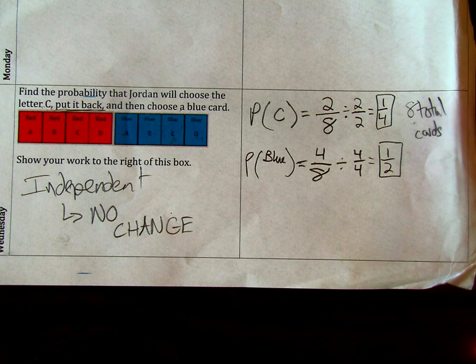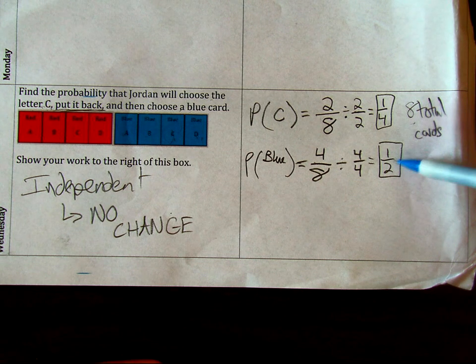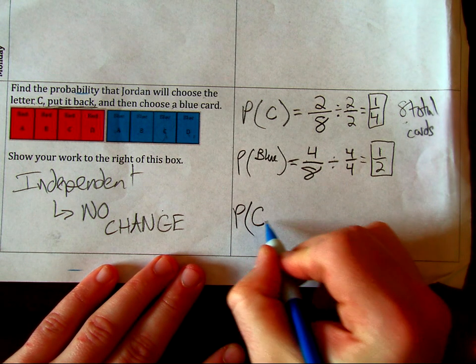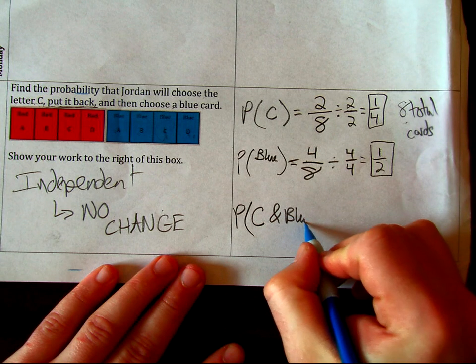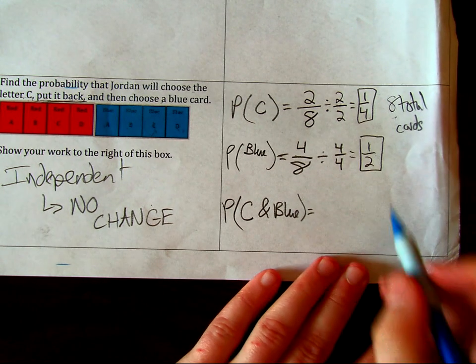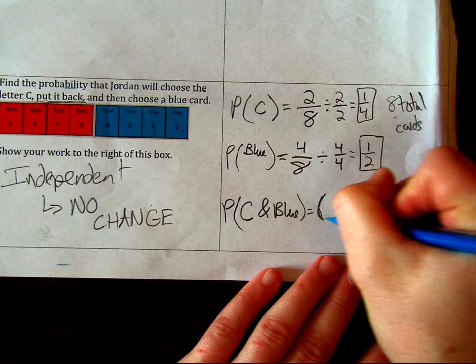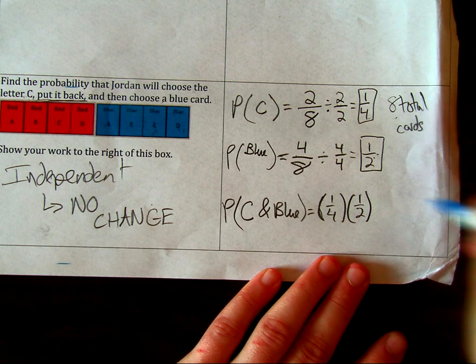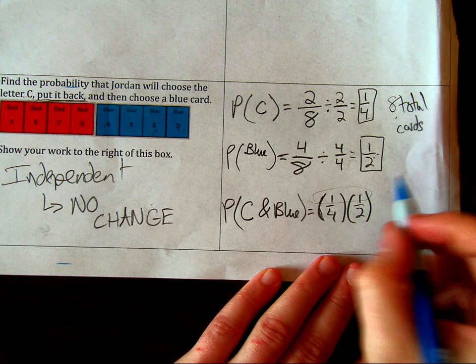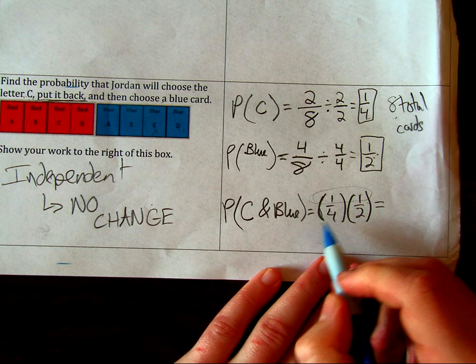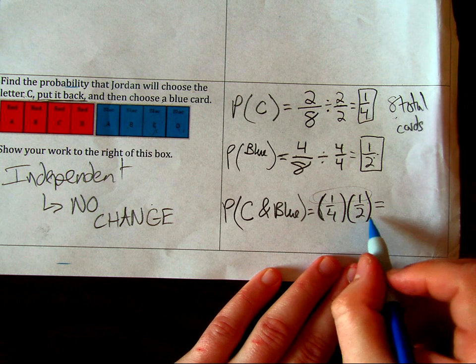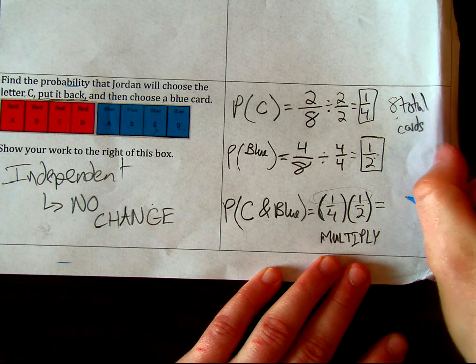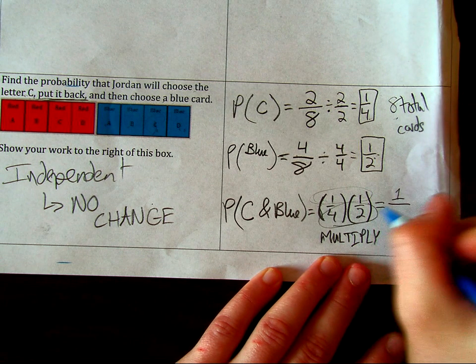Now that we have those two fractions, make sure you multiply those two together. So we write it like this. We say the probability of those two events happening at the same time, we would say probability of picking a C and picking a blue, is equal to. And then we have our first fraction, so we have in parentheses to show multiplication. We say 1/4 times the second fraction, which is 1/2. Again, make sure you're multiplying the numerators together. A lot of people have just been adding those two together, or just adding straight across. Make sure that you are multiplying. So we multiply, multiply. So we have 1 times 1 is still 1, 4 times 2 is still 8.